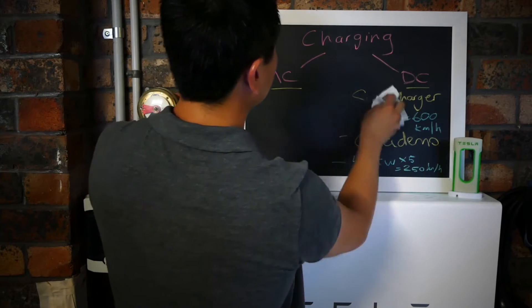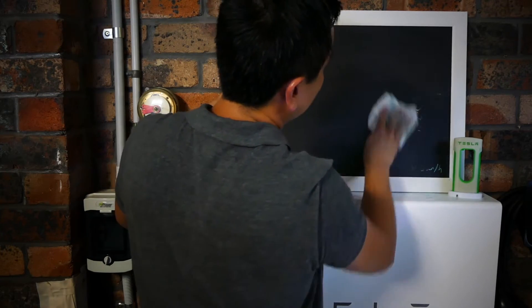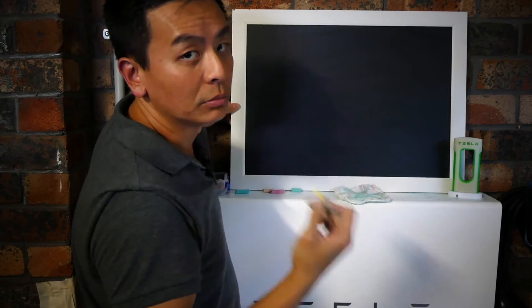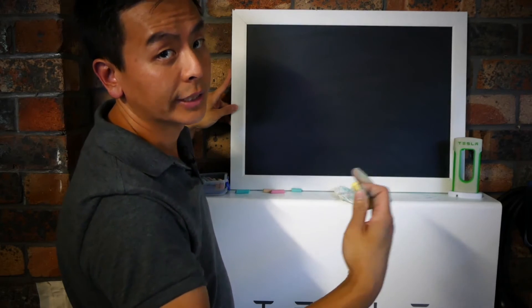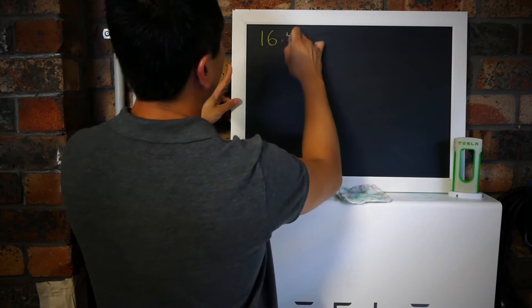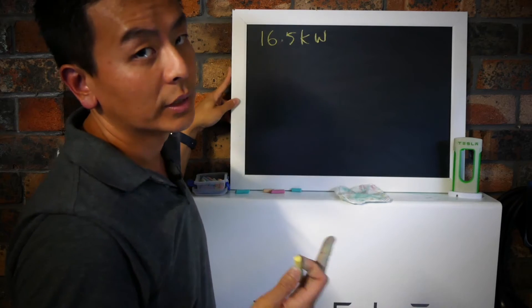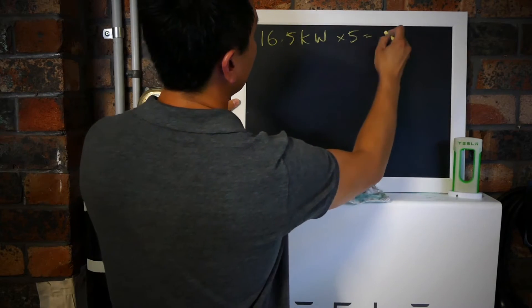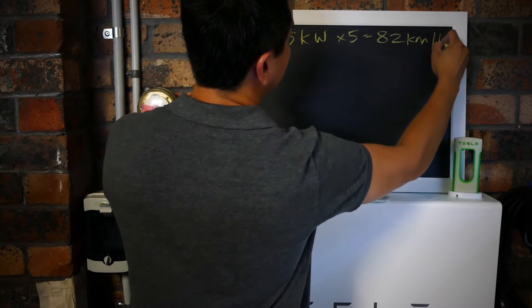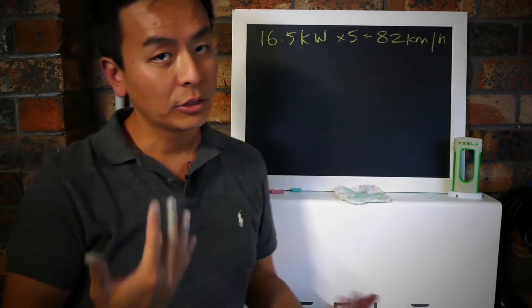The Tesla onboard charger in a new Tesla Model S or X will have a charging capacity of 16 kilowatts. Using my formula, multiply that by five - the maximum your car can charge from a destination charger is 82 kilometers an hour.